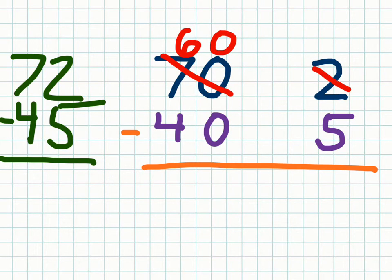And 2 becomes 12. You could also write the one here like some people do, but to really show my understanding, I'm going to write it like this. Now we can subtract: 12 minus 5 gives me 7, and 60 minus 40 gives me 20.